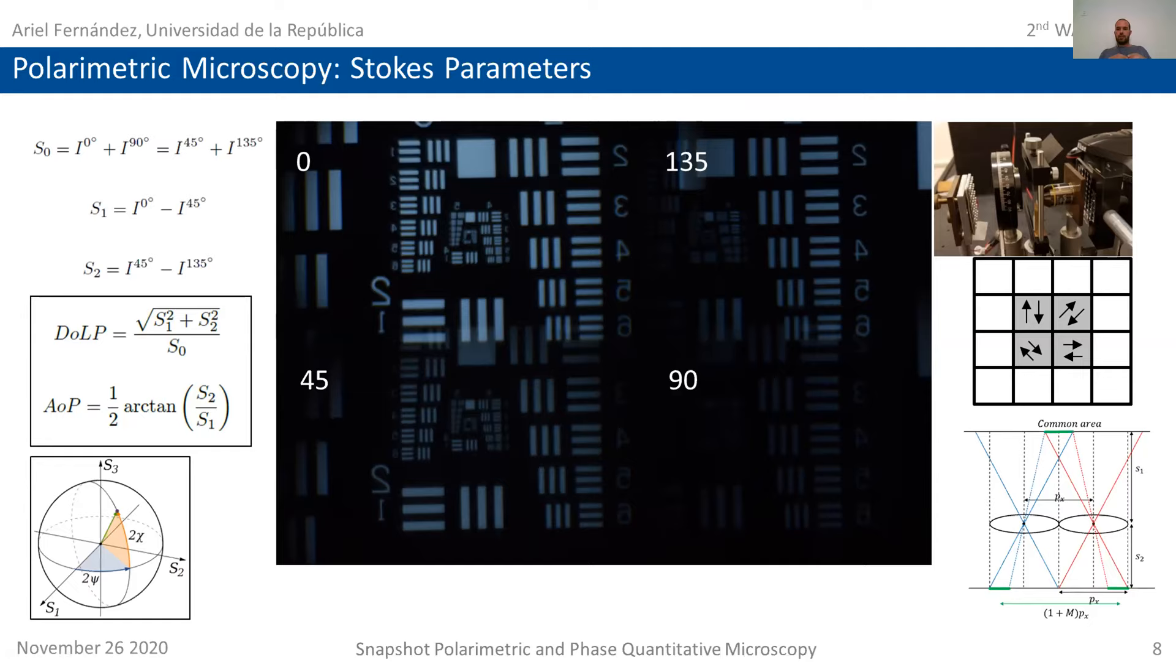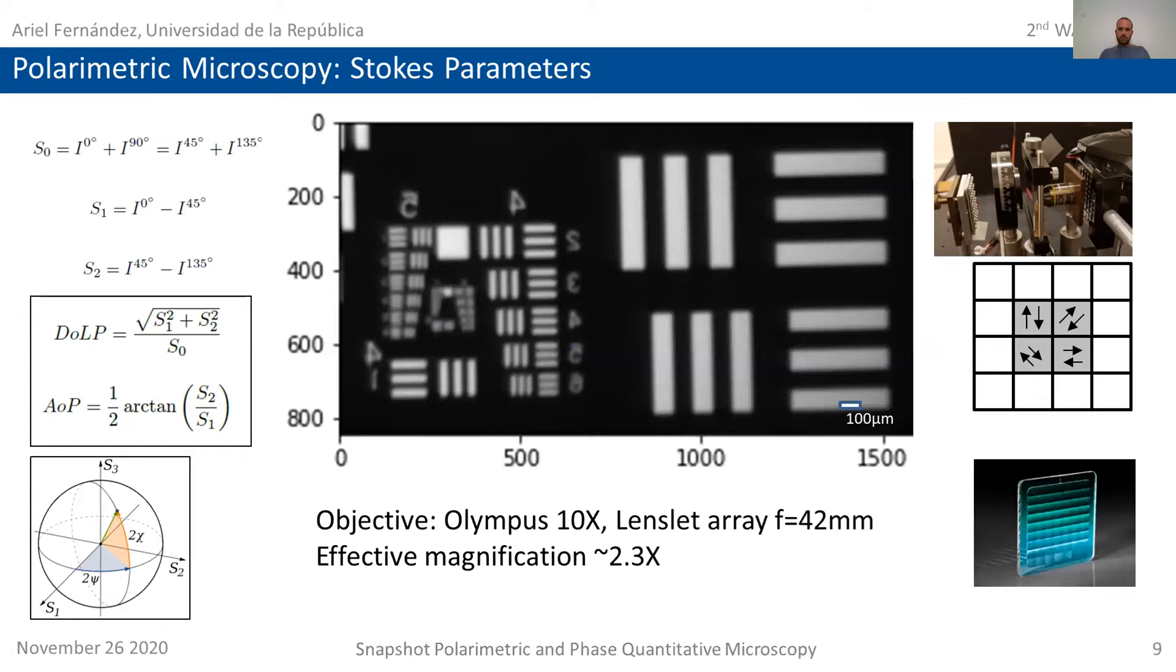The registration process is somehow maybe the bottleneck or the most delicate process that we need to do, and we need to find what is called the common area. We need to put all this information together, have the greatest field of view possible, and operate. What we obtain here is an image that corresponds to the previous ones but only taking into account the common area where we can operate. We are using an Olympus 10X magnification objective, and our lenslet array is with a focal distance of 42 millimeters, so in whole we have an effective magnification that is reduced from the original magnification of our objective, but we can operate at real time.